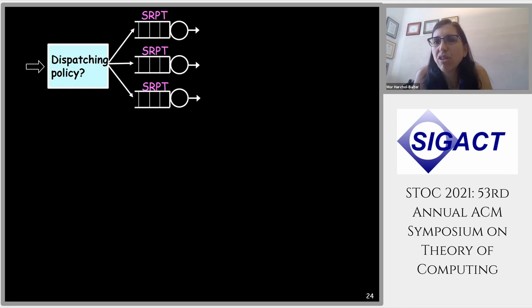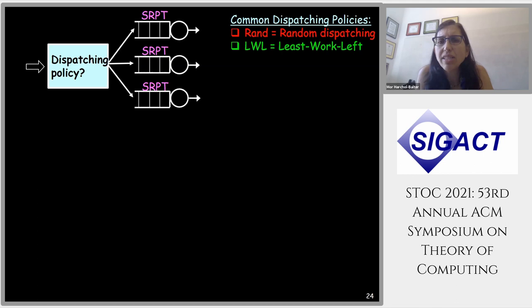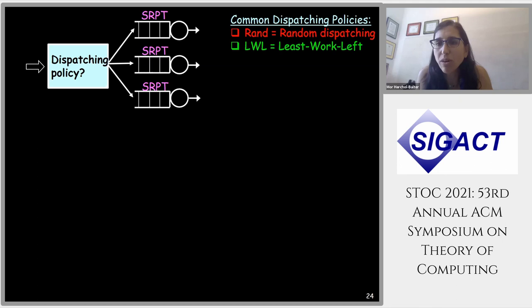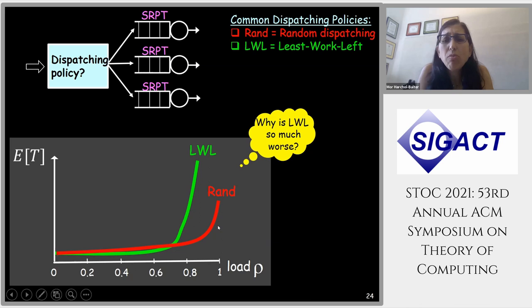To get intuition about dispatching, consider simple common policies. The simplest is RAND — every job goes to a random queue. A more sophisticated policy is Least Work Left — each arriving job goes to the queue with the least total remaining work. Looking at mean response time as a function of load, Least Work Left actually has significantly higher mean response time than RAND. Why is Least Work Left so much worse, and are any policies optimal?